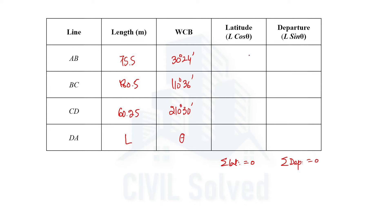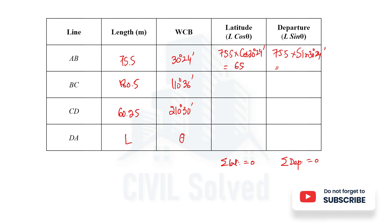The formula for latitude is L·cos(θ), so for AB: 75.5 × cos(30°24'). The formula for departure is L·sin(θ), so for AB: 75.5 × sin(30°24'). Doing these calculations gives us the latitude of AB as 65.12 and departure as 38.20. Similarly, we calculate the respective latitudes and departures for the other lines.